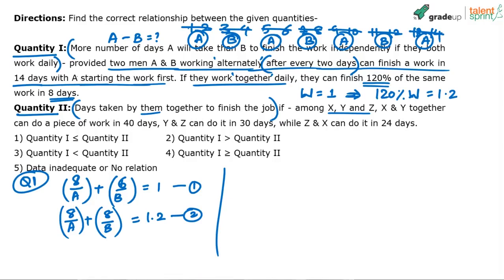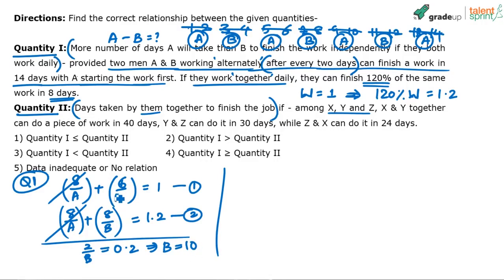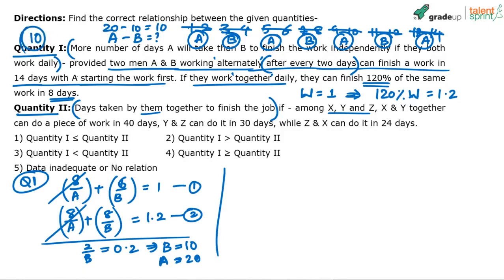Subtracting the first equation from the second: 8/a cancels, leaving 8/b minus 6/b = 2/b = 0.2, so B equals 10. Substituting B = 10 into the first equation: 8/a + 6/10 = 1, giving 8/a = 2/5, so A = 20. A takes 20 days independently, B takes 10 days, so quantity one = 20 minus 10 = 10.